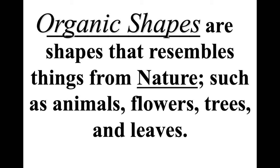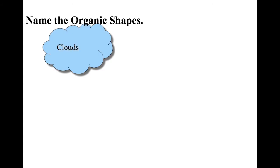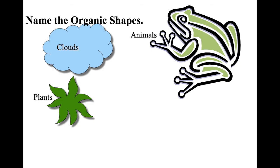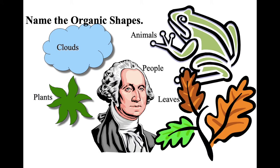Organic shapes are shapes that resemble things from nature, such as animals, flowers, trees, leaves, and so forth. If I was drawing a circle, there's only one right rule — it has to have 360 degrees, no straight lines. But if you draw a shape of a cloud and it looks like a cloud, then you got it right. There's no one right way to make a drawing of a frog or any animal — same with plants, people, and leaves. We call these organic shapes. Organic means natural or from nature.